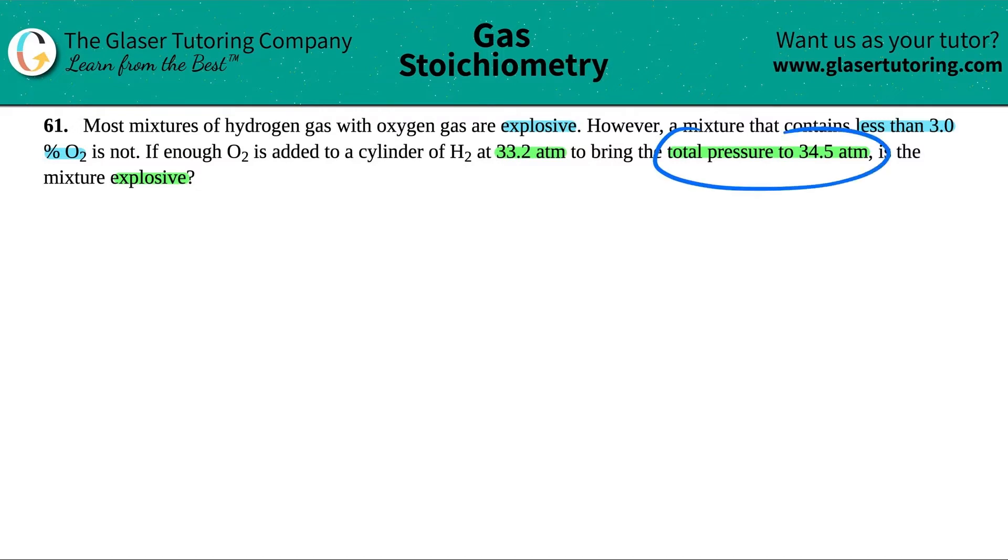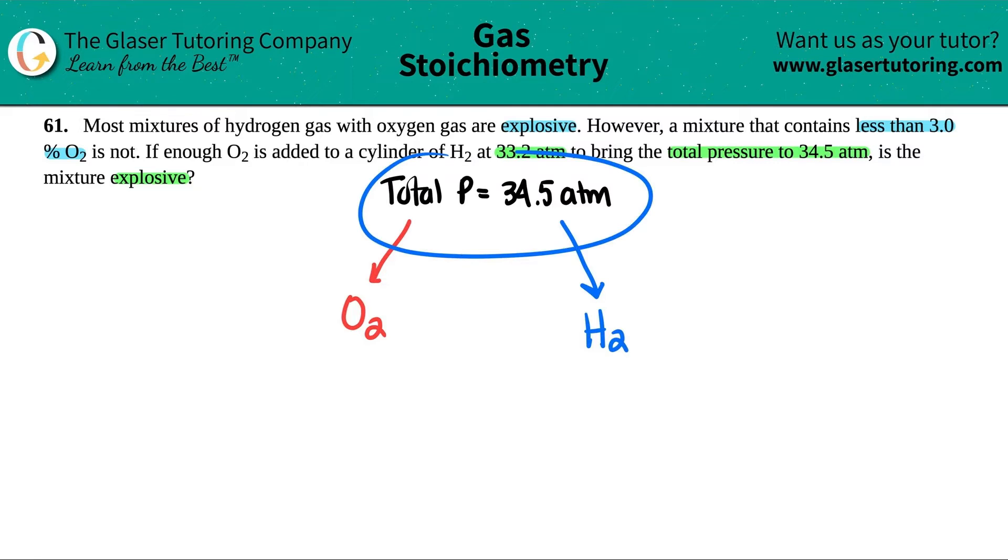Now let's take it from the top. The total pressure. They told us that the total pressure was equal to 34.5 atm. Now the total pressure of a mixture is always the accumulation of the partial pressures, aka the single pressures of each compound in it. So in this case, they gave us two different molecules. They told us that in our mixture, we had O2 being added to H2.